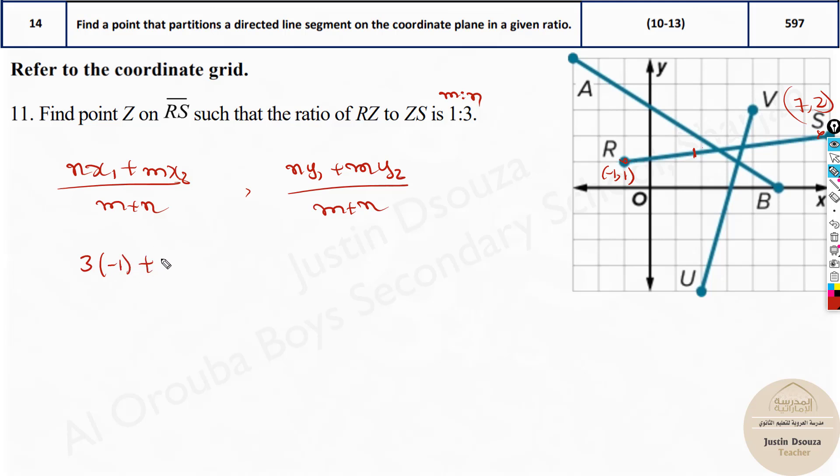So let's do X1 first. X1 is minus 1 plus M, which is 1, times X2, which is 7, divided by M plus N, which is 1 plus 3. Same thing over here but all we do is use Y1 and Y2. It's 1 plus M, which is 1, times 2 divided by 1 plus 3. Now we can put this in calculator and get the answers directly.